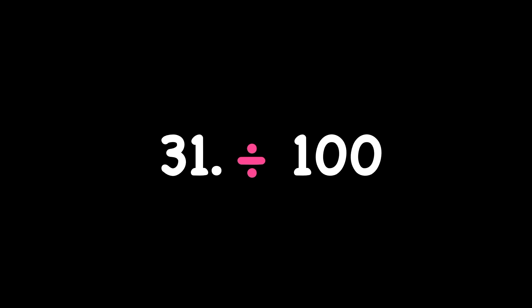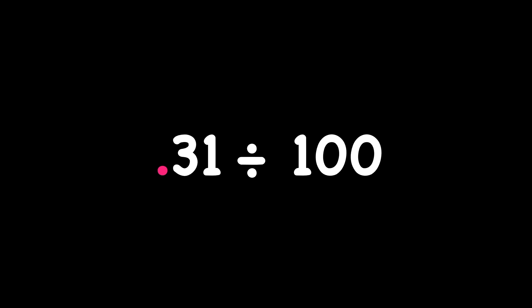Next we have thirty-one divided by one hundred. But aha! Don't forget thirty-one has a decimal point — it's just invisible. It goes after the whole number. We're going to have to move that decimal point to the left two places because we're dividing by one hundred. So there's one and there's two. That would move it right in front of the three. Thirty-one divided by one hundred is point three one, or thirty-one hundredths.